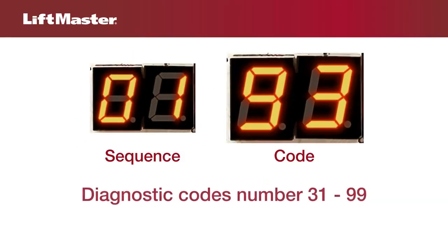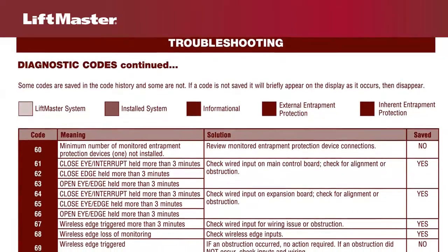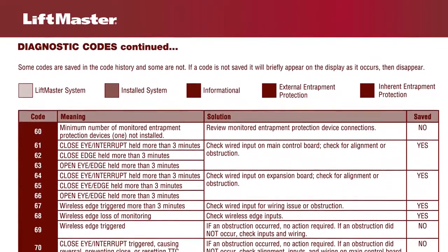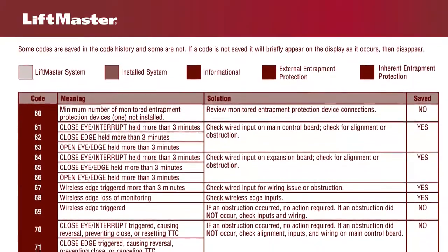The second part of the code is the diagnostic code itself, which will be a number from 31 through 99. For the complete list of diagnostic codes and their meanings, refer to the owner's manual or wiring diagram.